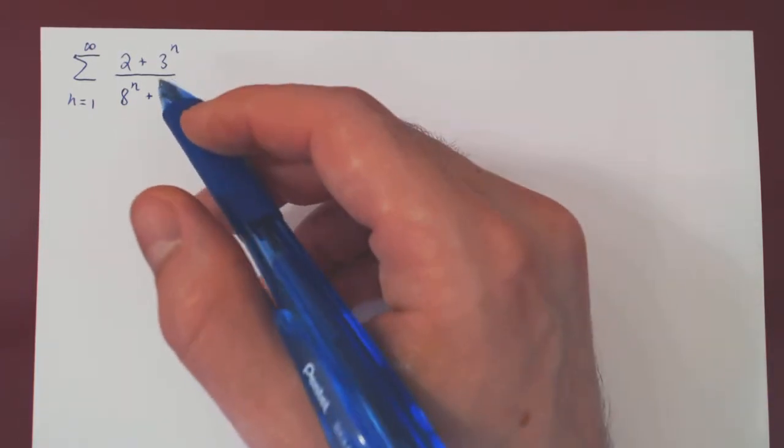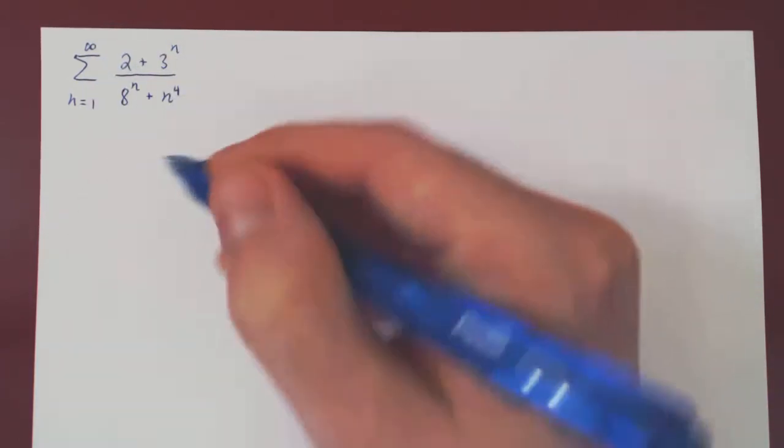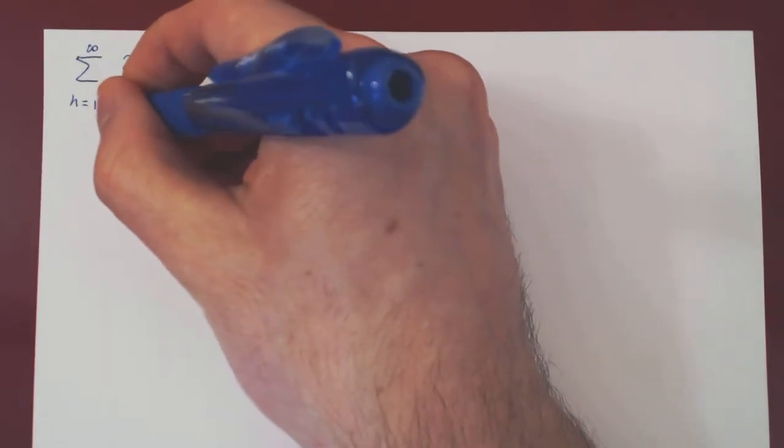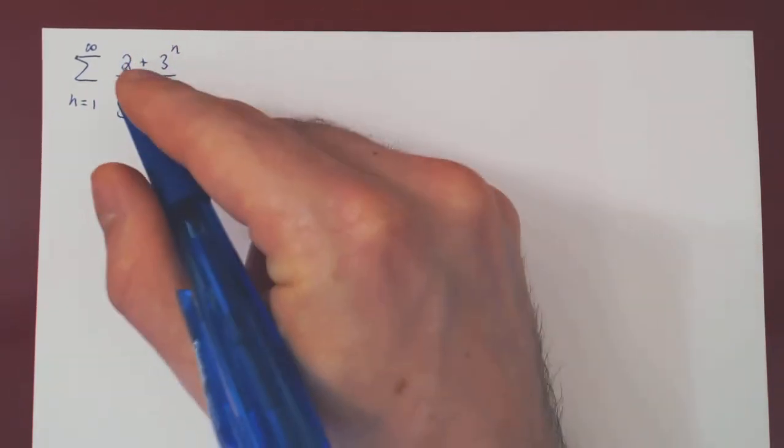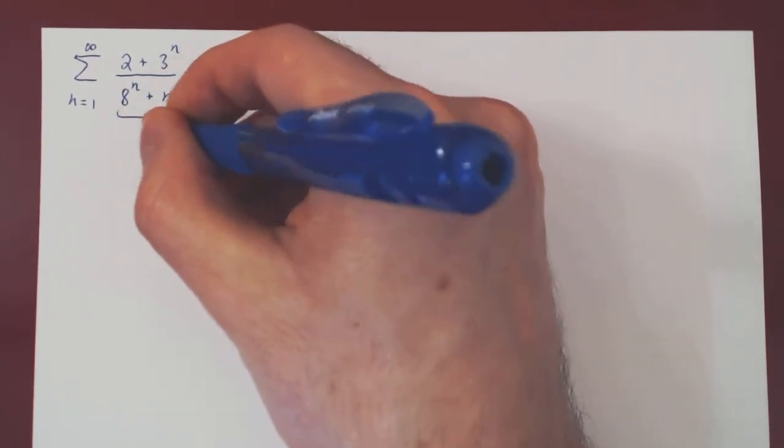Ok, so in this video we will determine whether the series converges or diverges using the limit comparison test. We are summing 2 plus 3 to the n over 8 to the n plus n to the 4, so this is our original sequence.